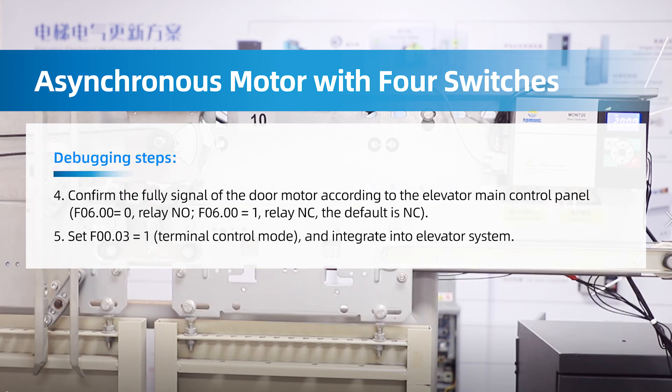Step 4: Confirm the full-open signal of the door motor according to the elevator main control panel. F06.00 equals 0 for relay NO; F06.00 equals 1 for relay NC — the default is NC. Step 5: Set F00.03 equals 1 and integrate into the elevator system.